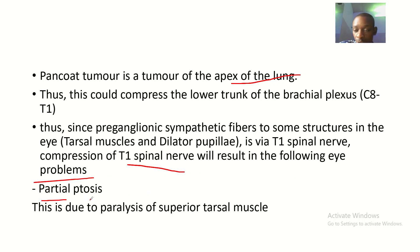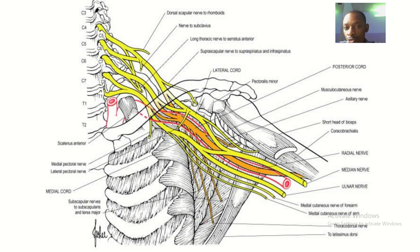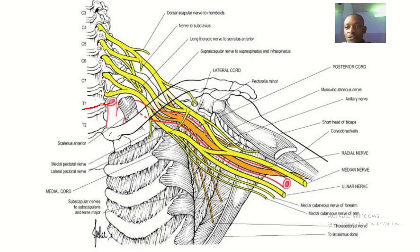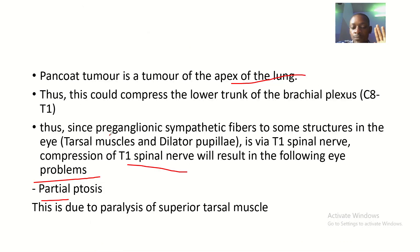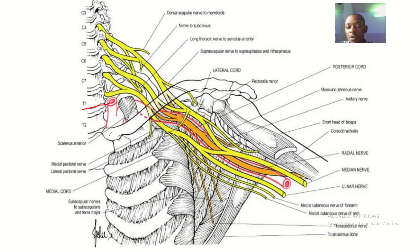First, you have partial ptosis. This is due to the paralysis of the superior tarsal muscle. Looking at the diagram, the lower trunk containing T1 is here, and the tumor of the upper part of the lungs compresses T1, causing partial ptosis through paralysis of the superior tarsal muscle.